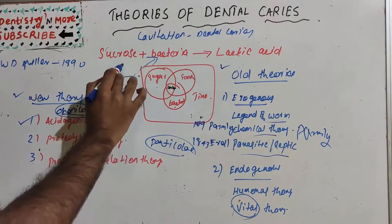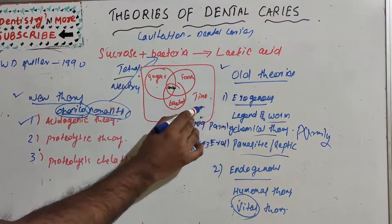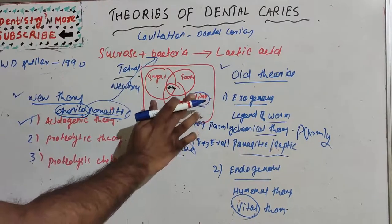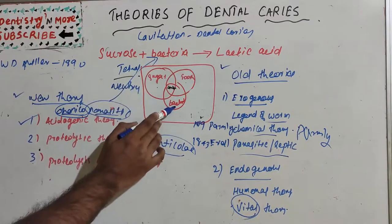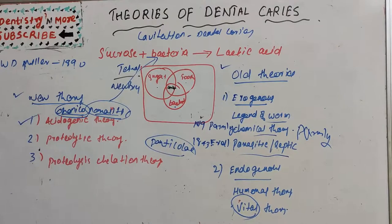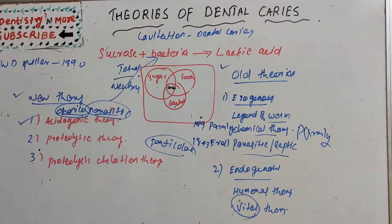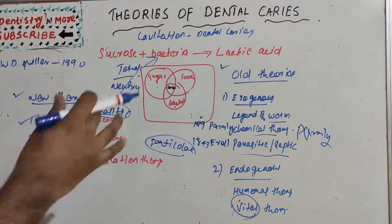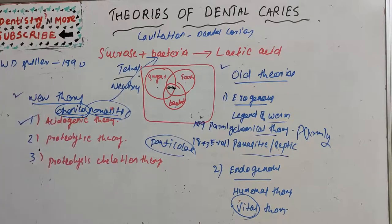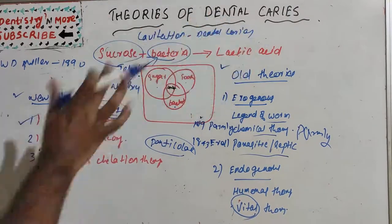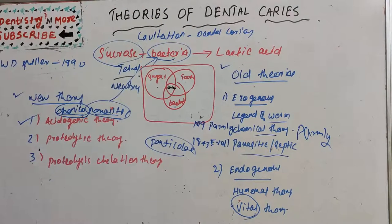At that time, the tetrad concept was not yet established — the tetrad was later given by Newbrun, which highlights the importance of time as a fourth factor. Until then, the three factors were: host factor (tooth), agent factor (bacteria), and diet (sugar). Miller similarly highlighted the role of carbohydrate, microorganisms, acids, and dental plaque. Bacteria are present on dental plaque, so proper cleaning — removing dental plaque — eliminates the bacteria such as Streptococcus mutans that cause dental caries. It is a multifactorial disease; all factors must be present.